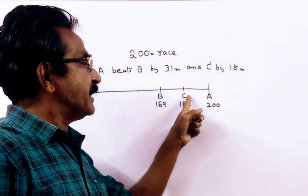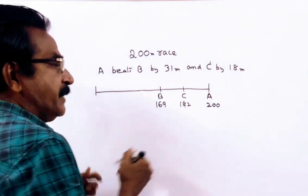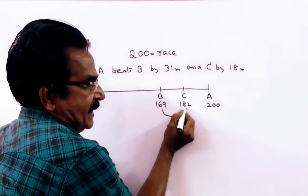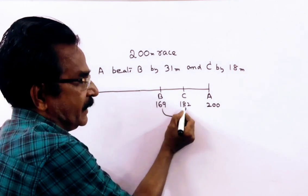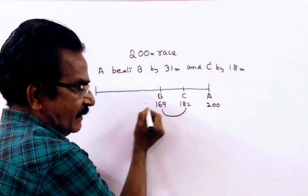C runs only 182 meters. If you take B and C, in a race of 182 meters, C beats B by 13 meters.